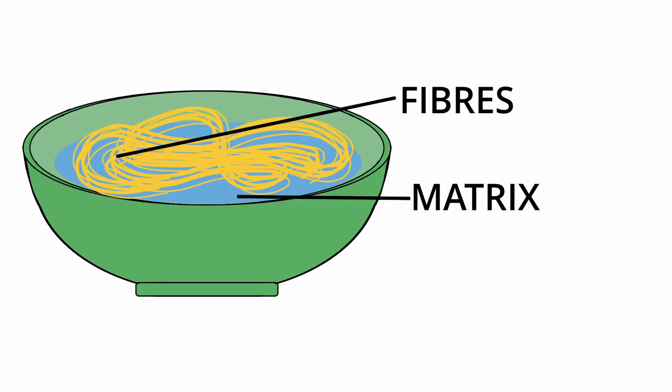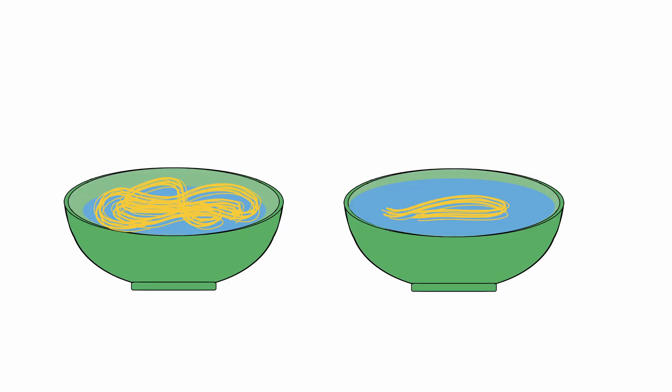To remember this, we can consider matrix as the water in noodles and fibers as the noodles. When there are more noodles than water, it is dense, and when there is more water than noodles, it is loose.